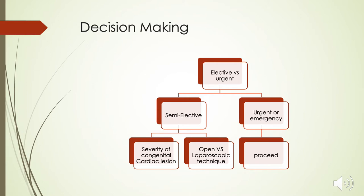Regarding decision making, we considered this case to be a semi-elective procedure, so there was certainly time to optimize the patient further if needed. The severity of the congenital cardiac lesion is a very important factor in preoperative decision making — it guides the level of preoperative care and the hospital setting required. We also had to decide on performing open versus laparoscopic technique, considering the benefits of laparoscopic technique in post-operative recovery. We decided on laparoscopic cholecystectomy with a low threshold to convert to open if hemodynamic instability occurred.